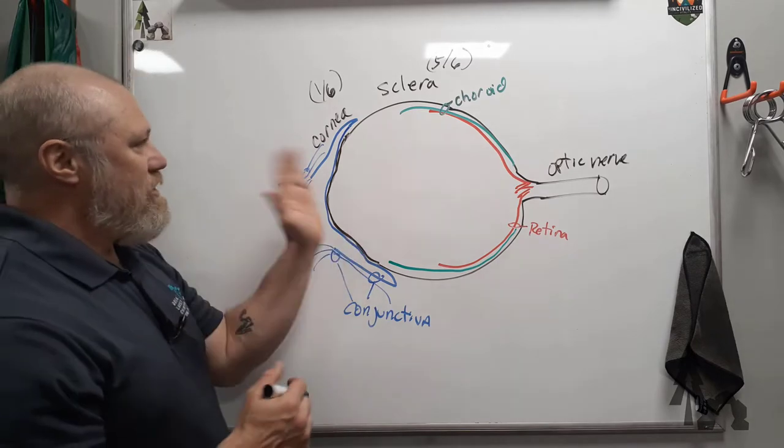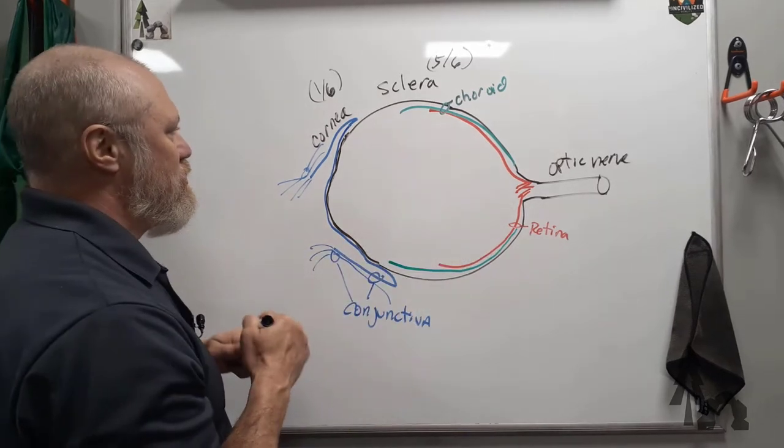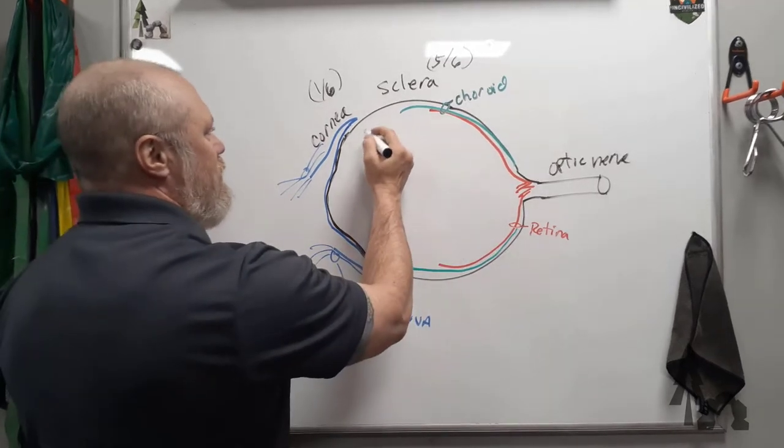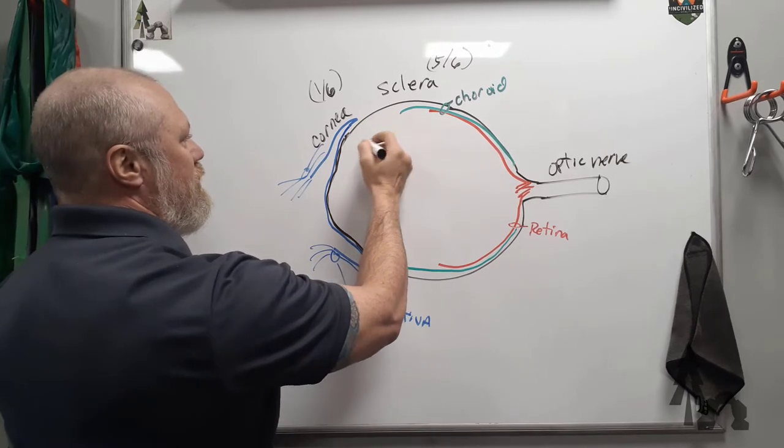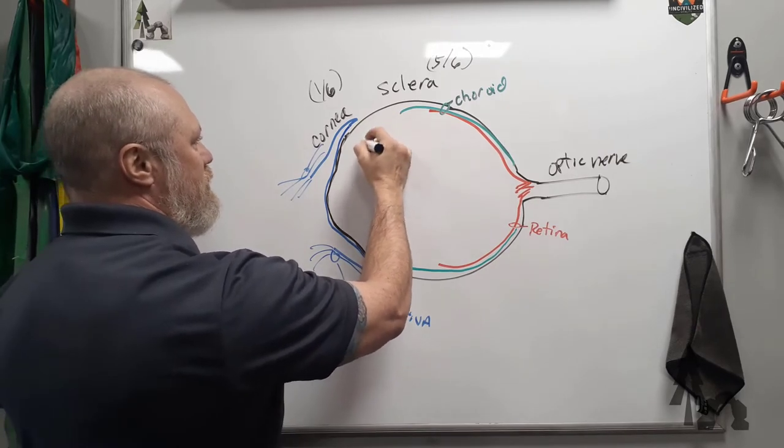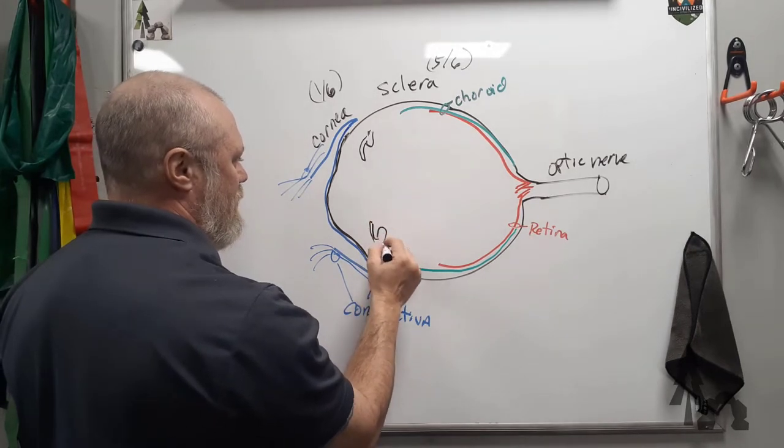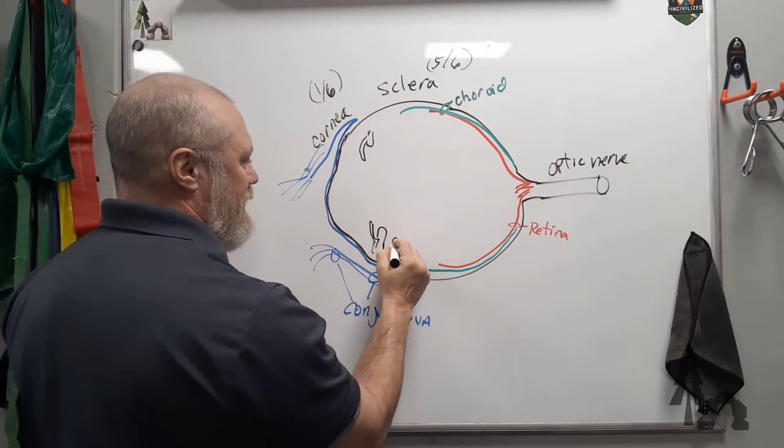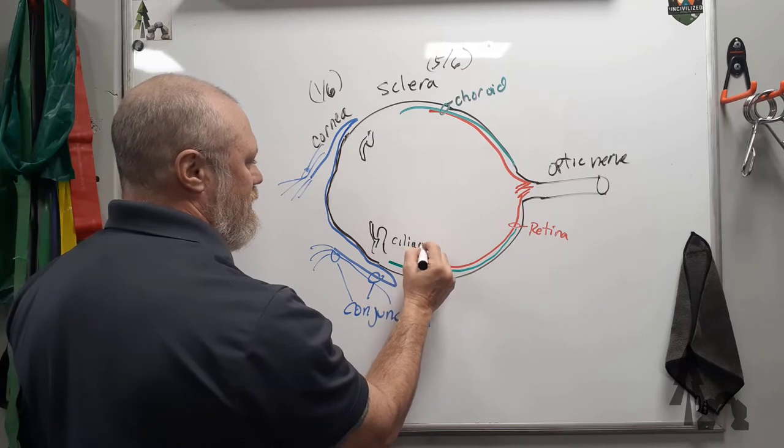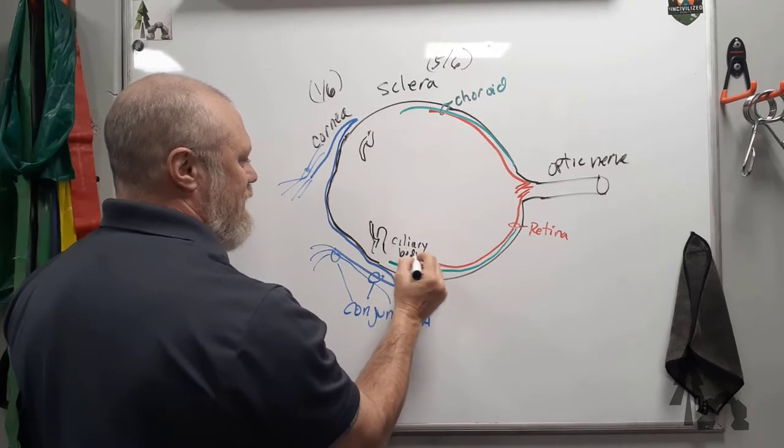Now at the anterior part of your eye, the eye can be divided into two chambers. There are, along the choroid, this little structure here called the ciliary body. The ciliary body. And the ciliary muscles.